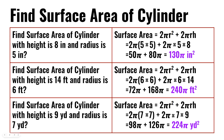Find the surface area of a cylinder with height 9 yards and radius 7 yards. 2π(7×7) + 2π×7×9. 7×7 is 49; 49 times 2π is 98π. 7×9 is 63; 63 times 2π is 126π. 98π plus 126π is equal to 224π yards squared.